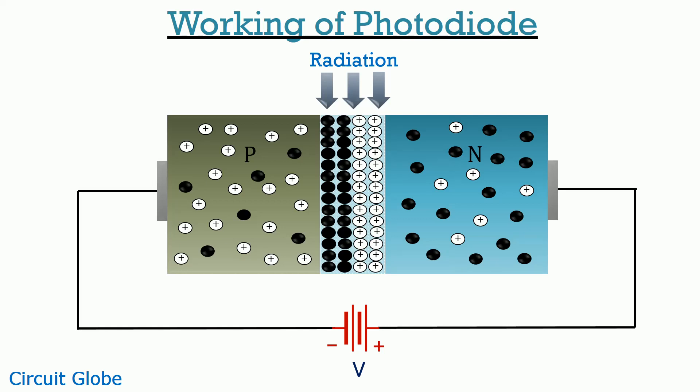The name itself is indicating that dark current flows through the device in the absence of any type of radiation. The movement of minority carriers across the junction—minority carriers for the P side is electron and minority carrier for N side are holes—the movement of these minority carriers across the junction will generate a small reverse current and this reverse current is known as dark current.